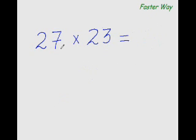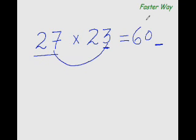What is 27 times 23? Again, the same thing. Add this digit to this entire number. 27 plus 3 is 30, but before I put down 30 here, I have to double it up. So double of 30 is 60. And for the last digit, 7 times 3 is 21. So I will write 2 here, 1 here. So the answer would be 621.